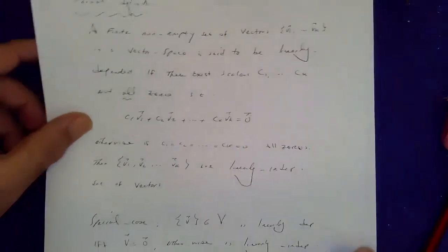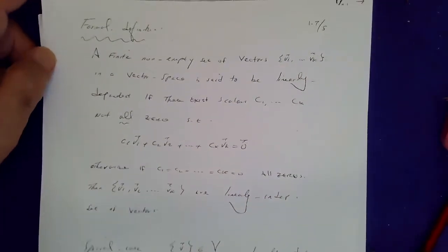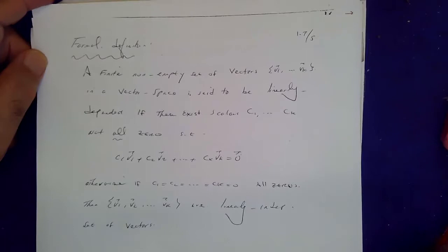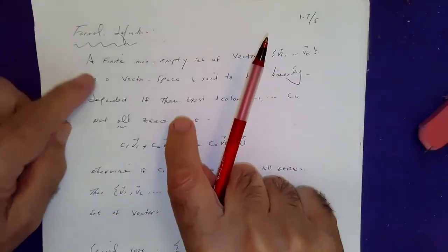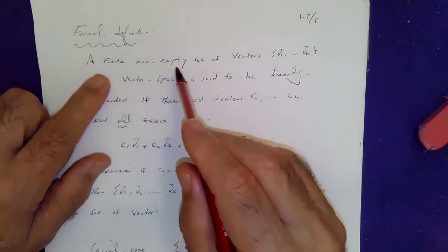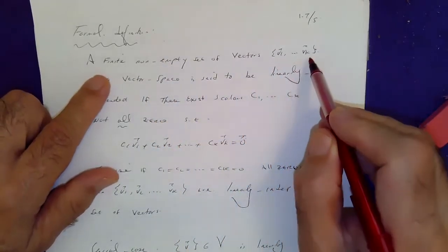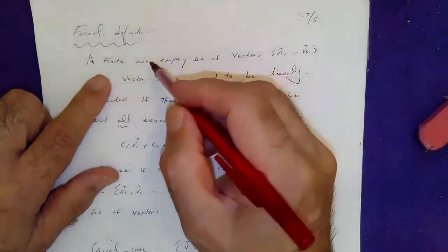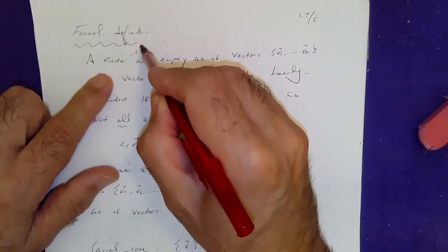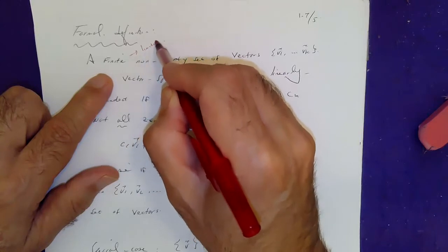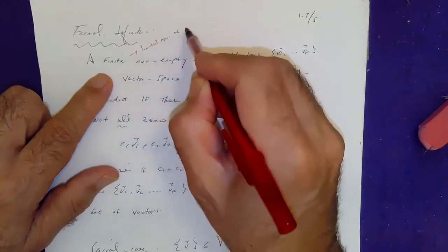So the formal definition of linear dependency and independency is as follows. A finite, non-empty set of vectors, v1 through vk. Finite means you have a limited number of vectors.